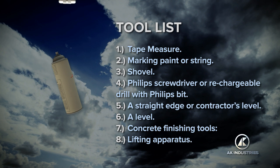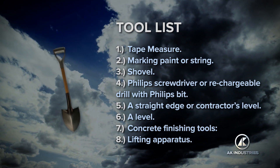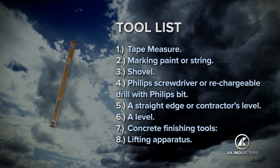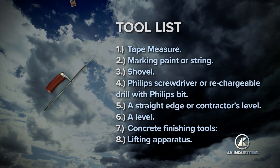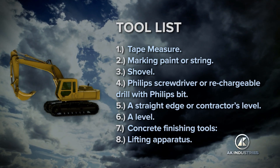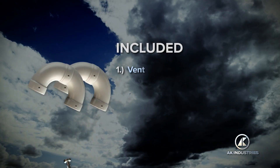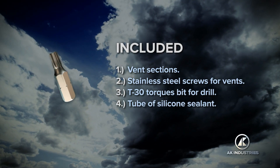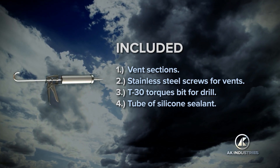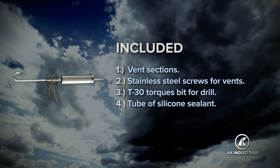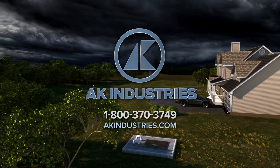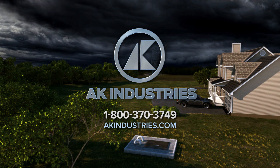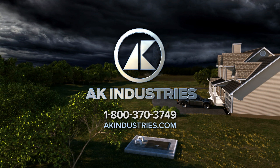Tool list: tape measure, marking paint or string, shovel, Phillips screwdriver or rechargeable drill with Phillips bit, a straight edge or contractor's level, concrete finishing tools, lifting apparatus. Included with the unit: vent sections, stainless steel screws for the vents, T30 torque bit for a drill, and a tube of silicone sealant. For more information on the storm shelter, contact AK Industries at 1-800-370-3749 or at akindustries.com.